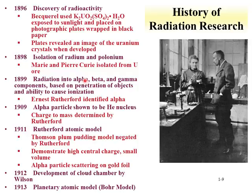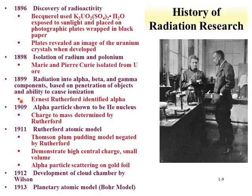Alpha particles have the highest mass and can be stopped with a piece of paper. Beta particles, now identified as electrons, can be stopped with aluminum foil or plastic. Gamma particles are photons and require lead shielding. In 1903, the Curies and Becquerel were awarded the Nobel Prize. In 1909, Rutherford showed that the alpha particle was indeed a helium nucleus with a charge of two, deflectable by a magnetic field.